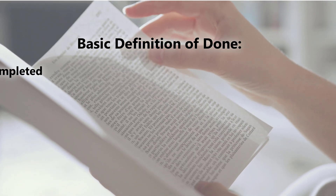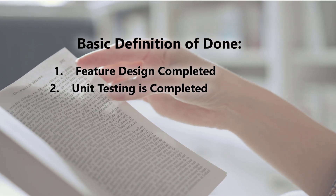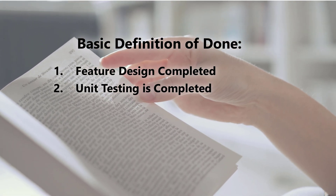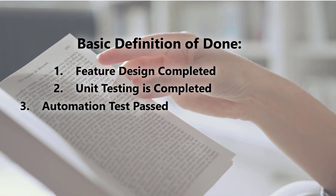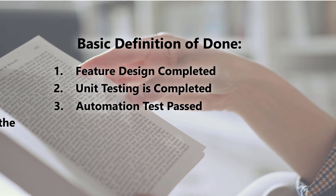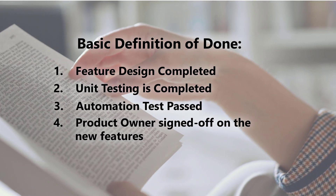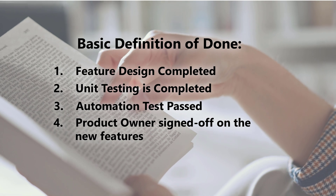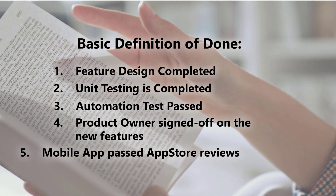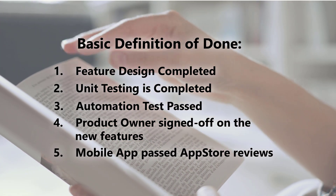Here is a sample basic definition of done consisting of five checklist items: number one, feature design completed; number two, unit testing is completed; number three, automation test passed; number four, product owner signed off on new features; and number five, mobile app passed App Store reviews.